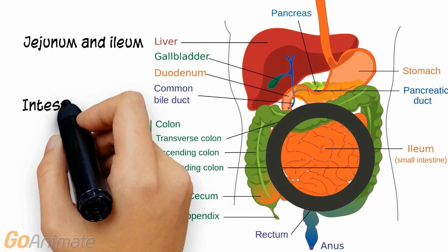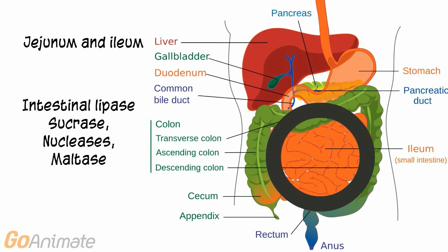Chyme then moves to the jejunum and ileum parts of the small intestine, where most of digestion and absorption is finished. Some intestinal enzymes include intestinal lipase, sucrase, nucleases, and maltase.